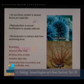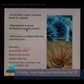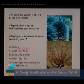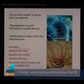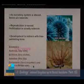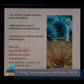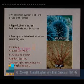Echinoderms do not have a prominent excretory system. Sexes are separate, reproduction is sexual, fertilization is usually external, and development is indirect with a free-swimming larva. Dipleurula is a hypothetical free-swimming larval form applicable to all echinoderms. Examples: Asterias (starfish), Echinus (sea urchin), Antedon (sea lily), Cucumaria (sea cucumber) and Ophiura (brittle star).